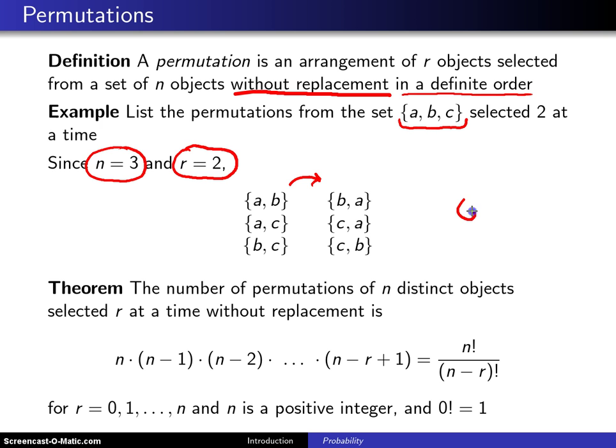So there are six different permutations of two objects selected from three objects. So here is a theorem that will tell you how to calculate how many there are. What we just finished doing was enumeration, but what we're about to do right now is look at a way of counting them.